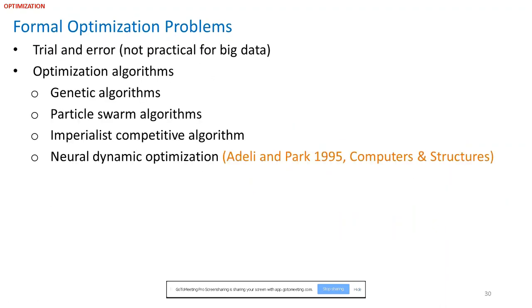To solve an optimization problem, we can do trial and error, but that is not practical for big data. In some problems we had like 11,000 design variables to be optimized. In those cases we use optimization algorithms such as genetic algorithms, particle swarm algorithms as examples of nature-inspired optimization algorithms, and a more robust algorithm — the patented algorithm of our research team — called the neurodynamic optimization algorithm.